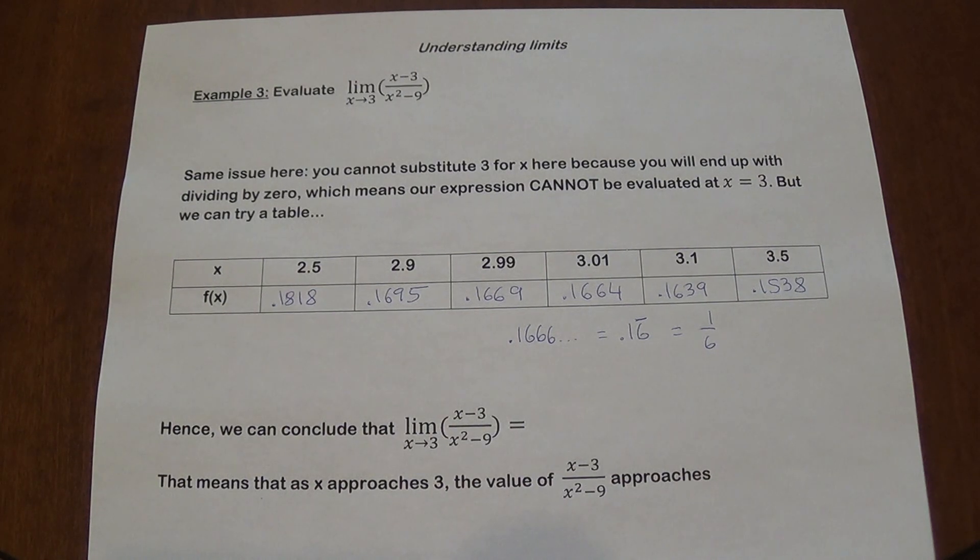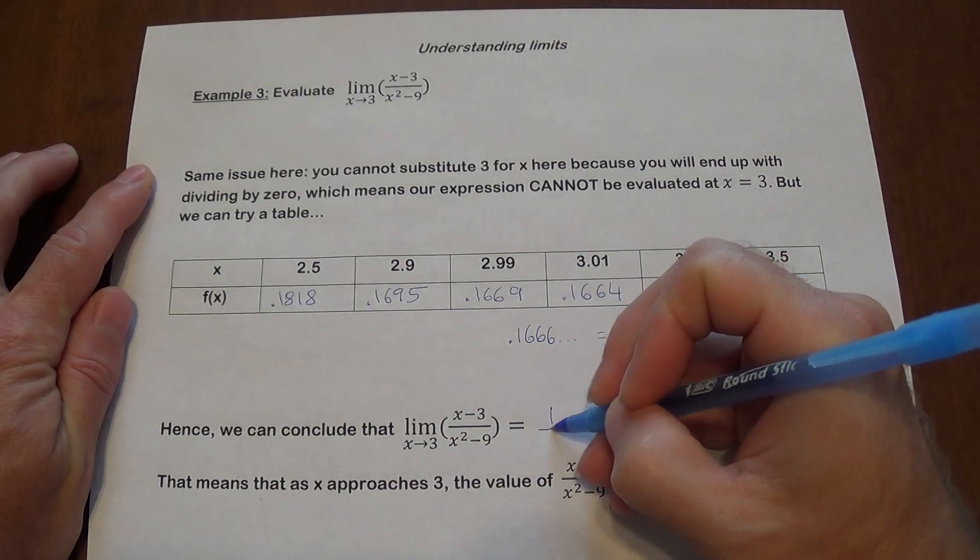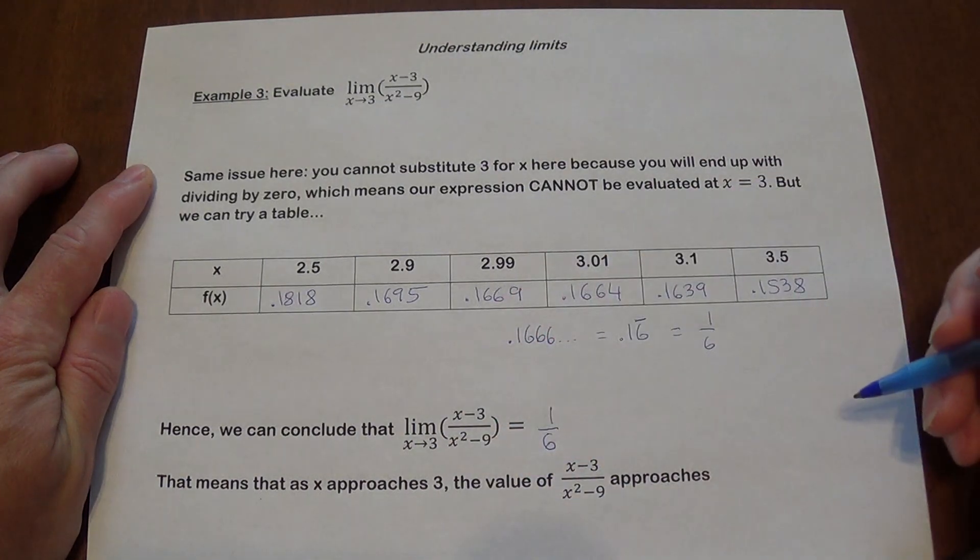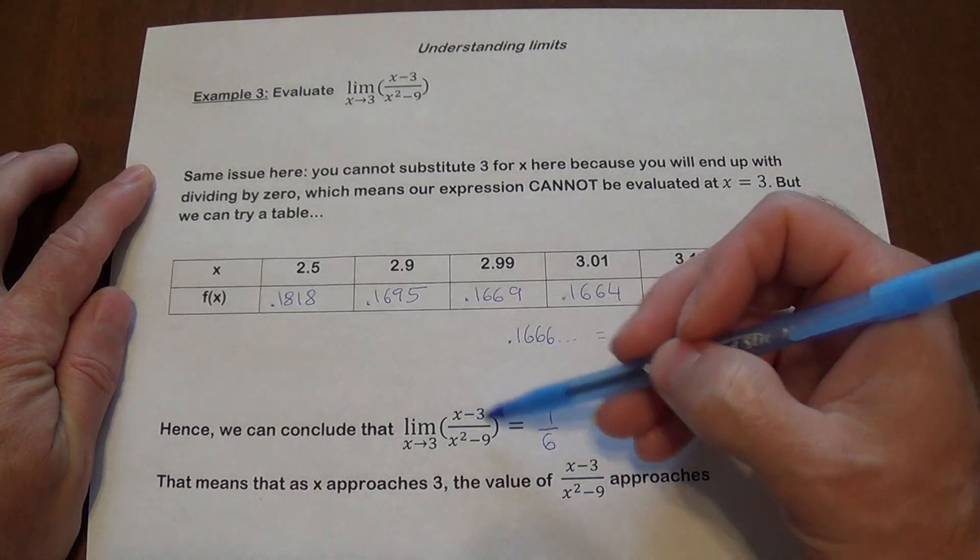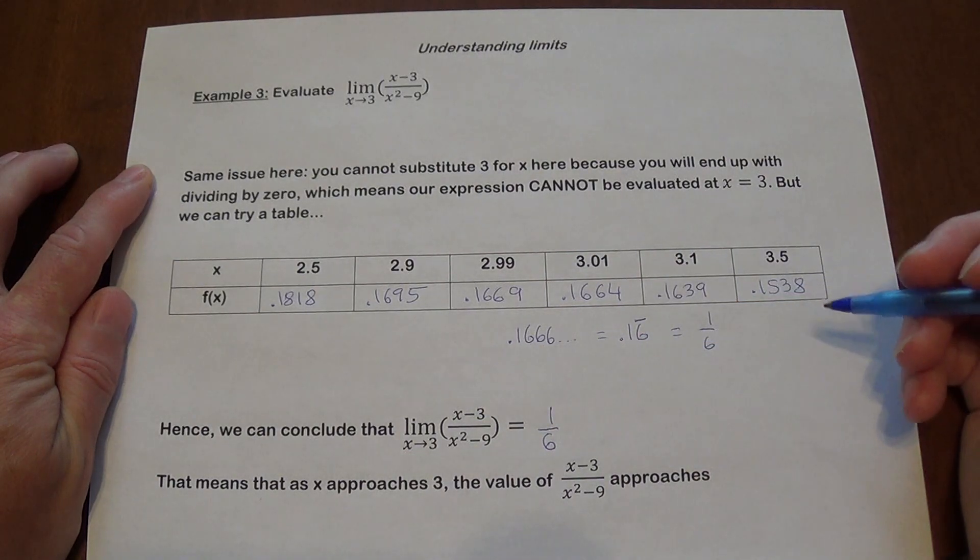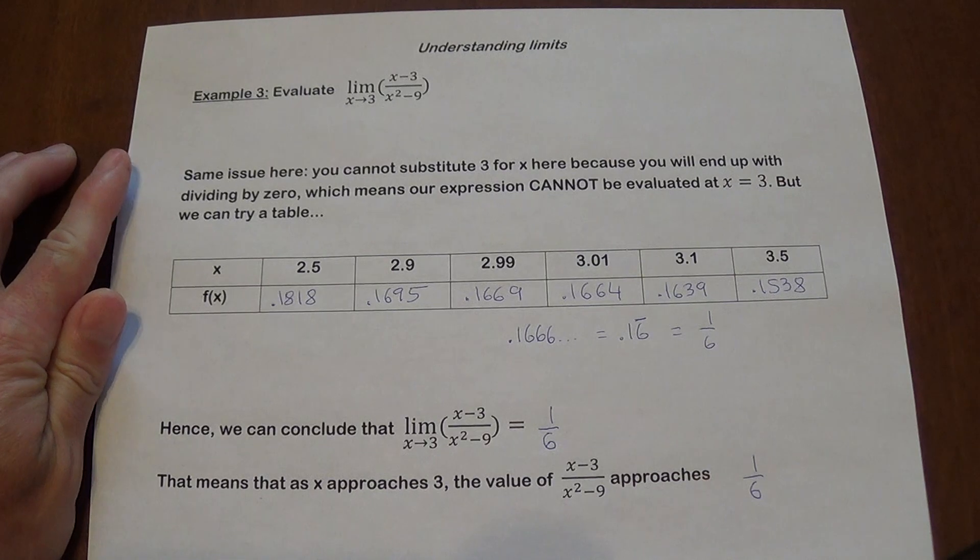And that's for another thing. Right now we're just trying to understand the whole concept of limits. So what we can conclude here is this expression approaches 1/6. The limit approaches 1/6. As x gets closer to 3, the value of that expression is going to approach 1/6. So we have 1/6.